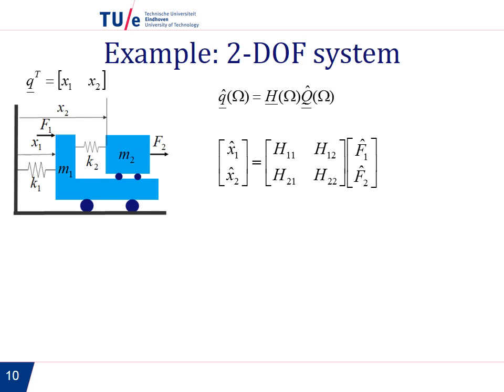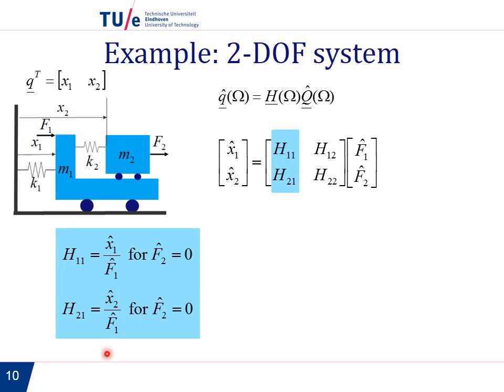So what are these terms in the frequency response function matrix? If we consider the first column, then we see that H11 is the ratio of x1 to F1 when force 2 is 0. And H21 is the same thing, but it is the ratio between x2 and F1. So the first column we can obtain it when we set force 2 to 0.